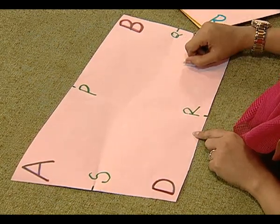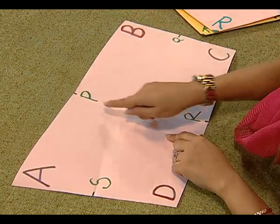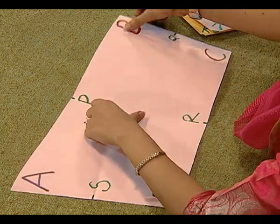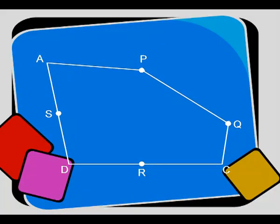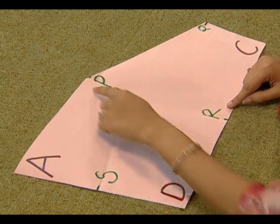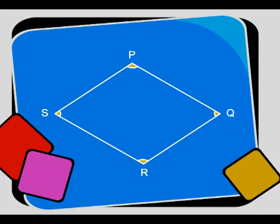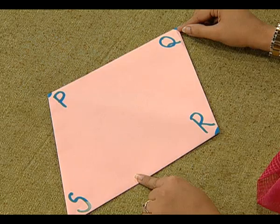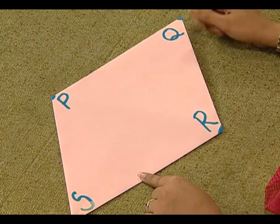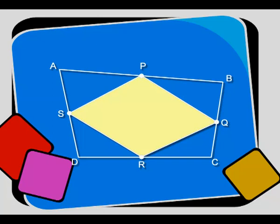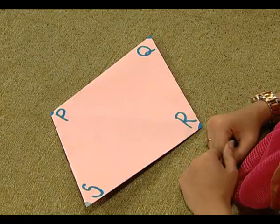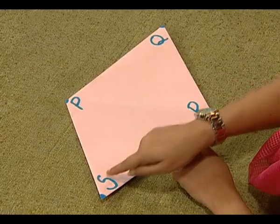We will now join these points P, Q, R, S and we will do so by paper folding. So let's start by joining P, Q. After folding PQ, we will fold QR, RS, and SP in the same manner. We will get this kind of a cutout. So what do we see? We observe that by joining the midpoints of the sides of any quadrilateral, we have obtained another quadrilateral P, Q, R, and S.